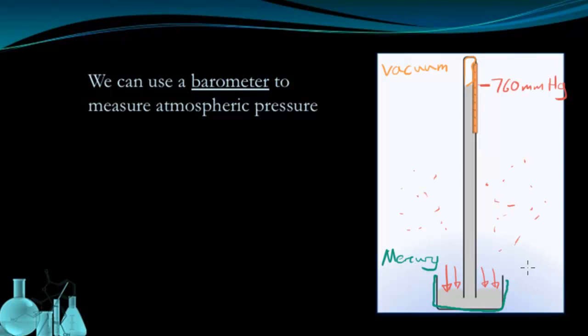So as I said, at normal sea level altitude, 760 millimeters of mercury would be how we measure the atmospheric pressure. If we are at a higher altitude,